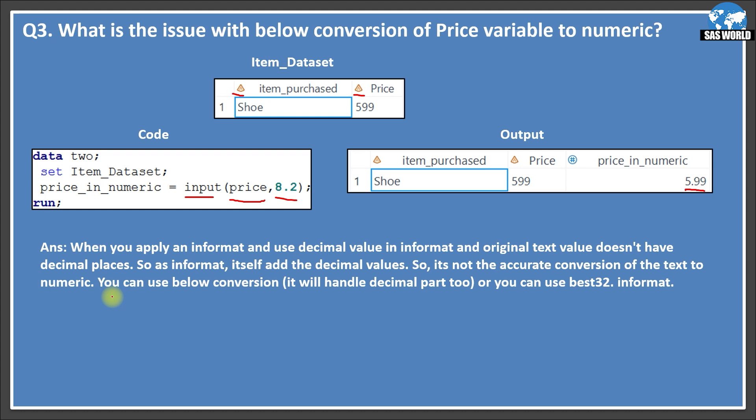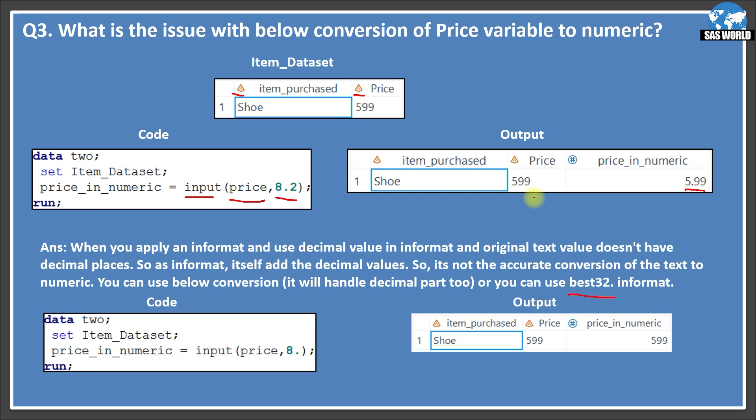So what you need to do is you can use below conversion. It will handle decimal part too or you can use best 32. So when I'm not clear, I generally use best 32 dot in format. It will handle both decimal or non decimal numeric values. So I have rewrote the same code. You can see this time I use input price and 8 dot and it has converted correctly. Okay, so you can use best 32. It most of the time best 32 works absolutely fine. So you can use this. I hope you are clear about this conversion and the issue with in formats.